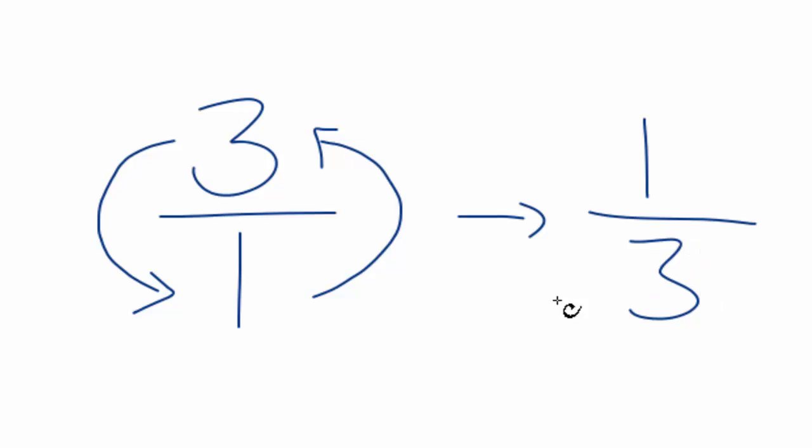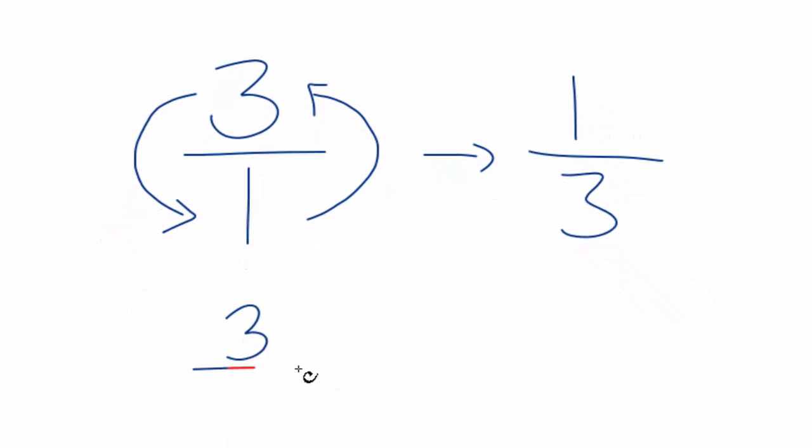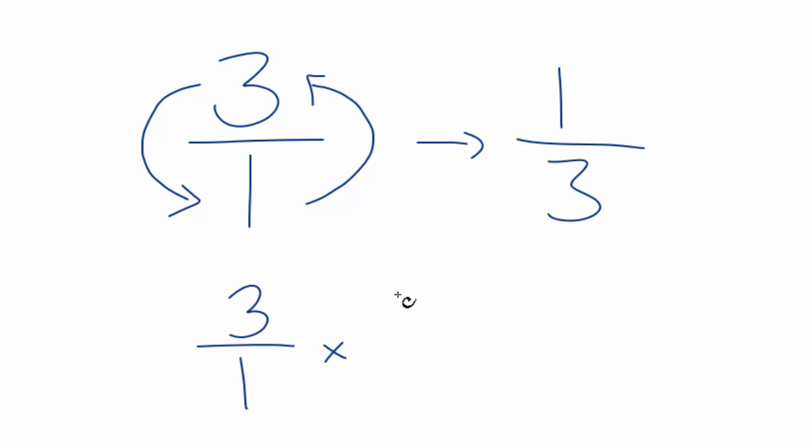We can check our work. We could take the original number, 3 over 1, and multiply it by its reciprocal. When we do that, if we end up with 1, that means we did the first part correctly.